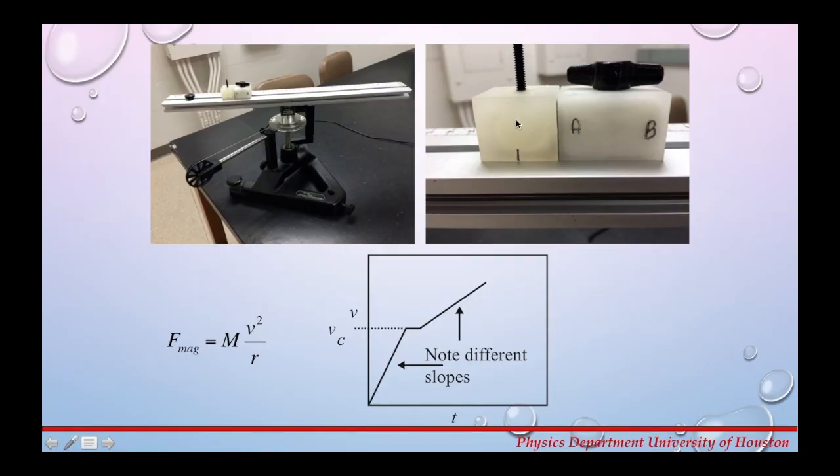When this accelerated block gains sufficient speed that the magnet can no longer hold in place this mass m will break away from the magnet and it will move along the track until it strikes the stop at the end of the track. The equation that describes this motion is given by f mag is equal m times v squared divided by r.